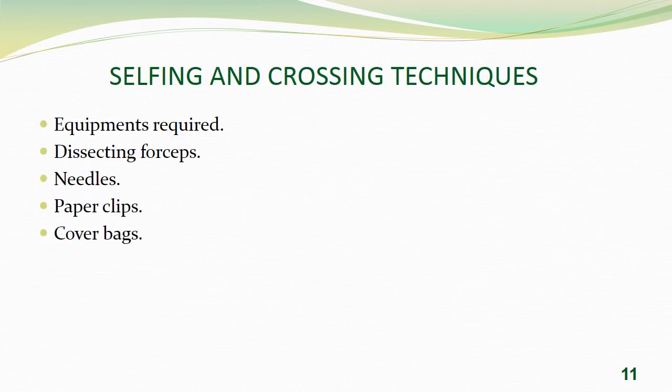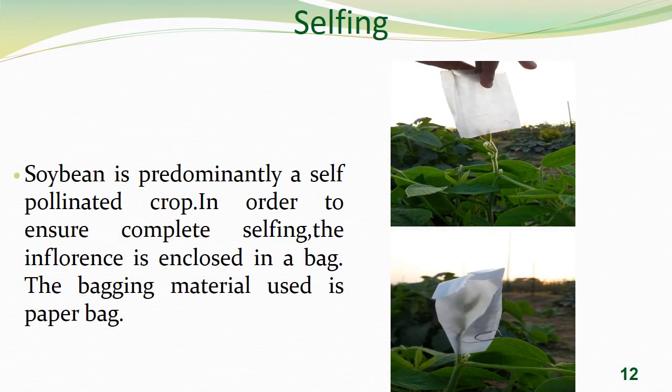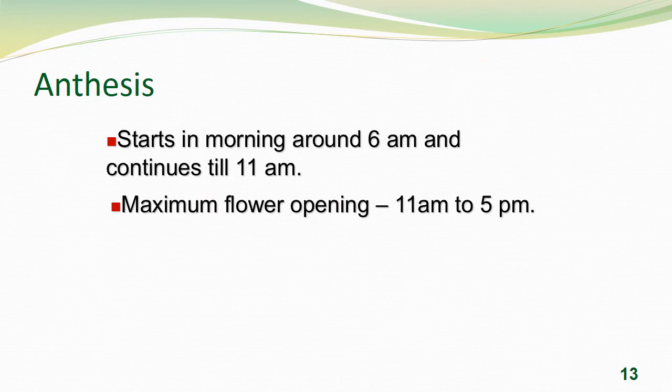Coming to selfing and crossing hybridization techniques, the equipment required are dissecting forceps, needles, paper clips, and cover bags. For selfing, since soybean is a predominantly self-pollinated crop, to ensure complete selfing the inflorescence is enclosed in a paper bag. Bagging starts during the morning around 6 AM and continues till 11 AM, with maximum flower opening from 11 AM up to 5 PM.